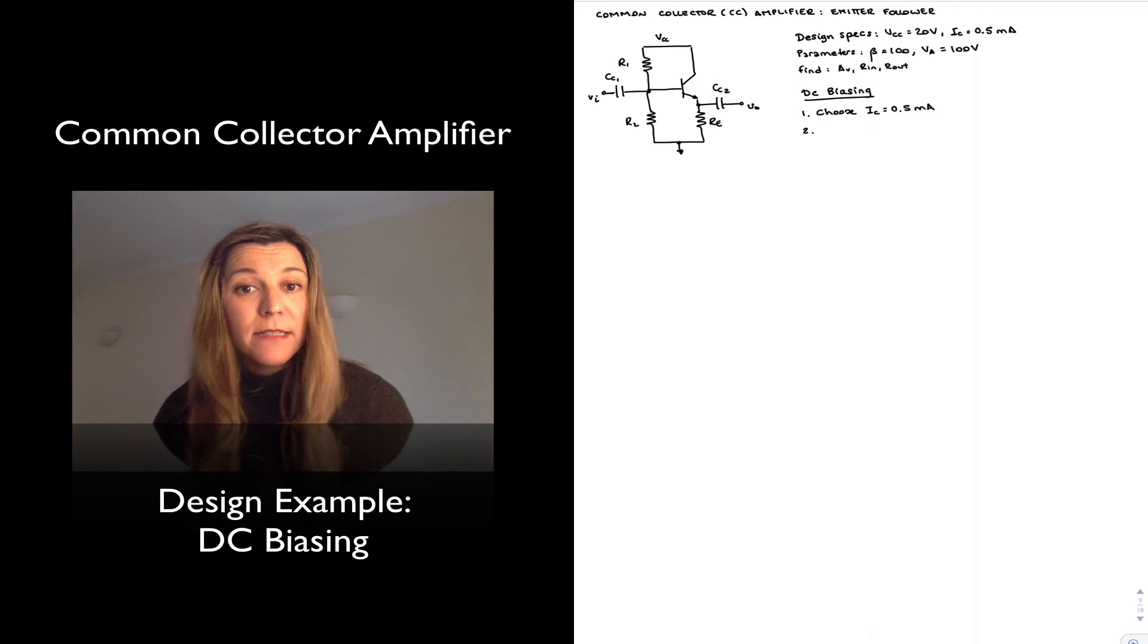In terms of temperature stability and beta stability, we have seen that increasing the emitter resistance, increasing the emitter voltage is good for beta and temperature stability. In the common emitter amplifier, we typically set it to one volt because we didn't want to eat too much of our output voltage swing. But in this case, we can set it higher, and that's in fact good for our output voltage swing.